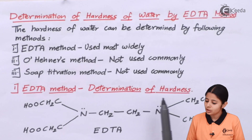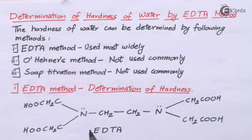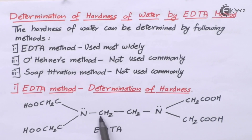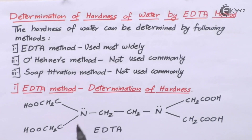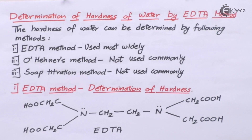EDTA method and determination of hardness. Now what exactly is EDTA? This is the chemical composition of EDTA. We can see CH2 with a nitrogen. Nitrogen needs to complete its octet — that is 8 electrons in its outermost shell. If the 8 electrons are complete in its outermost shell, that nitrogen or any element will be stable. Let us see how many electrons nitrogen has in EDTA.